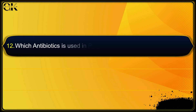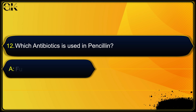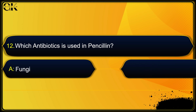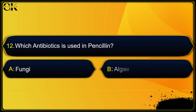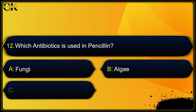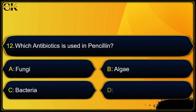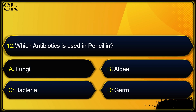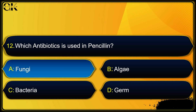Which antibiotic is used in penicillin? Options: algae, bacteria, germ, or fungi. The answer is fungi.